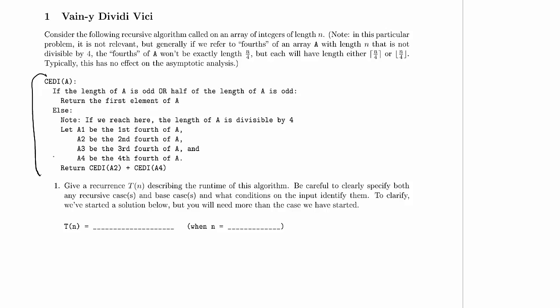But if the array is of an even length, there's two elements in the middle, and we just have to pick one or the other to be the middle element. And as it says in here, this doesn't affect our asymptotic analysis. So we won't have to worry about that.